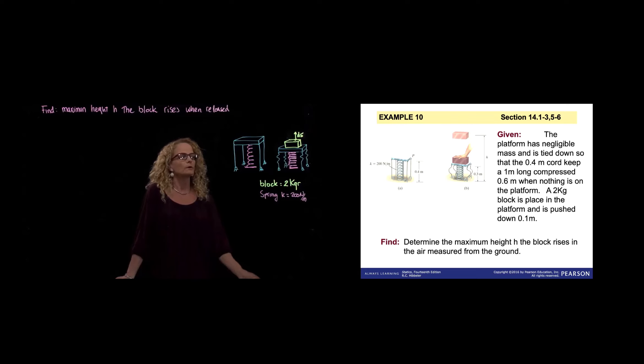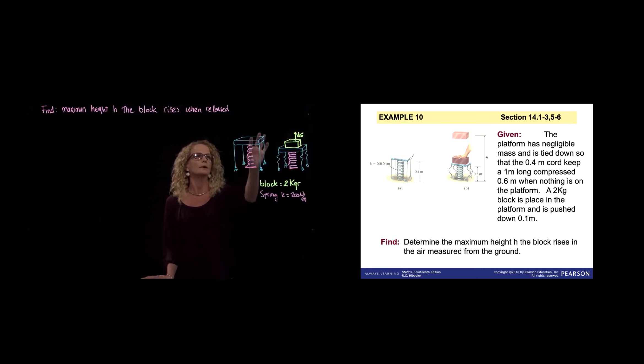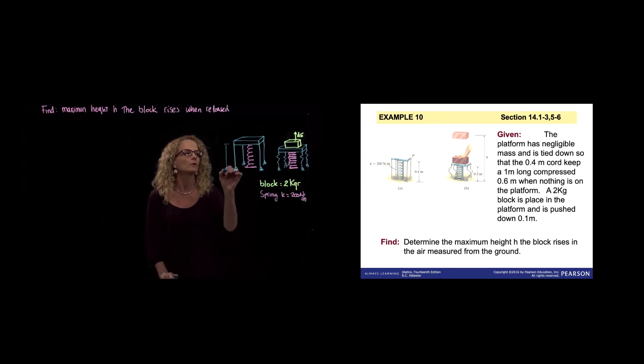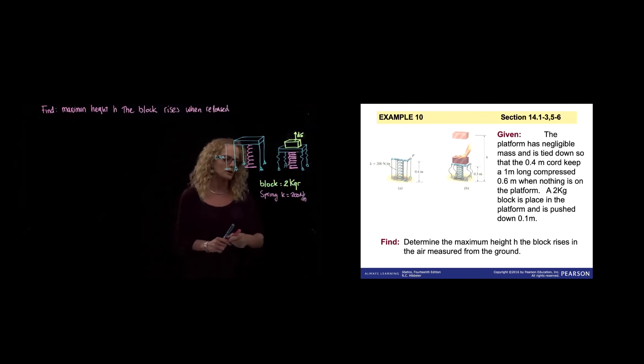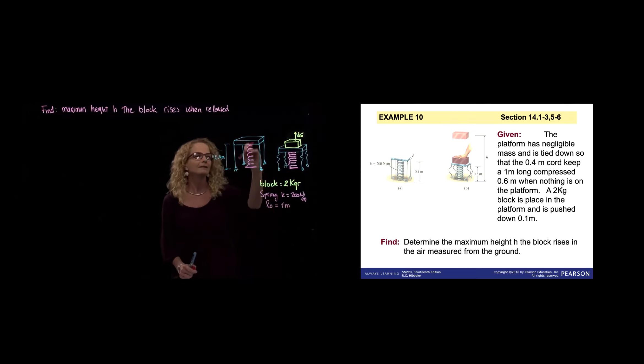In this problem, the platform has negligible mass. This is the platform right here, and it's tied down by four cords at a distance of 0.4 meters. The unstretched length of this spring is one meter, so it keeps this spring compressed.